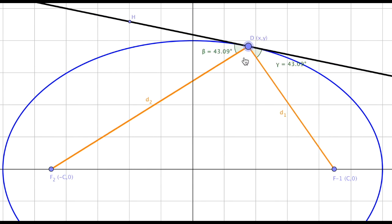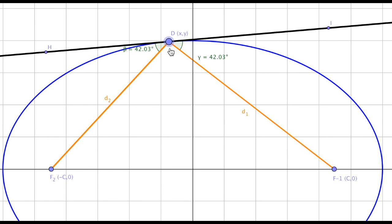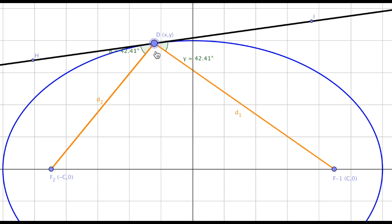So as we move our mirror or our edge of the table around, you can see that the angle measures are exactly the same for the angle of incidence and the angle of reflection. So it's kind of a cool feature of ellipses.